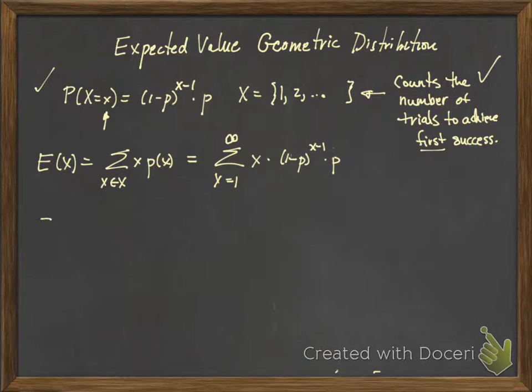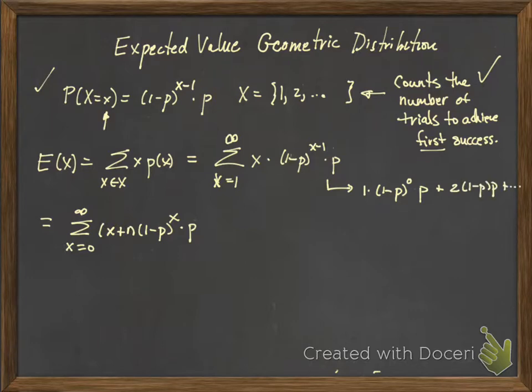Okay, so if we want to start our summation at 0, this would become X equals 0 to infinity. Now I have to change my all my X's so that I generate the same sum. So this X becomes X plus 1, and then you have 1 minus P to the X times P. And you can come over here and verify that you're generating the same sum, right? So it's 1 times 1 minus P to the 0 times P plus 2 times 1 minus P times P plus and so on. And over here we have 0, we get 1 times 1 minus P to the 0 times P, then X is 1, so 1 plus 1, we get 2 times 1 minus P to the 1 times P and so on. And so on, we're convinced.